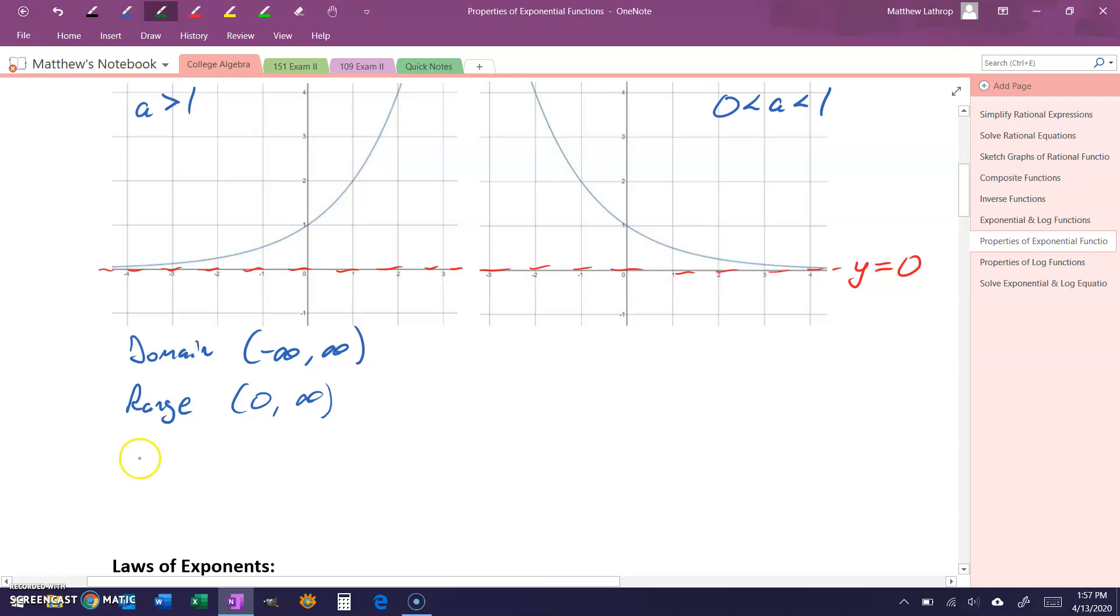When a is something larger than 1, we can see that our function is increasing on negative infinity to infinity, but when a is between 0 and 1, that's when we get a decreasing exponential function.